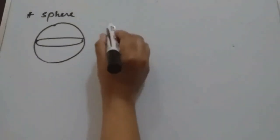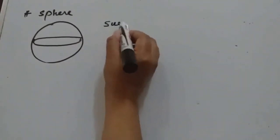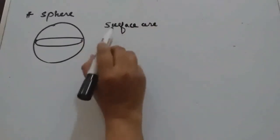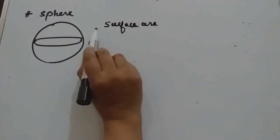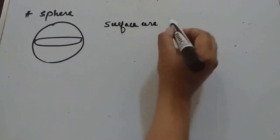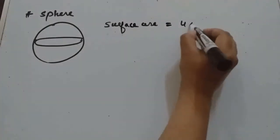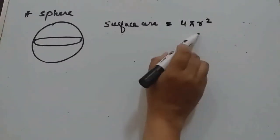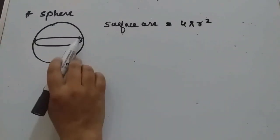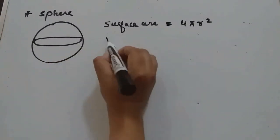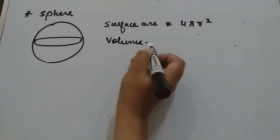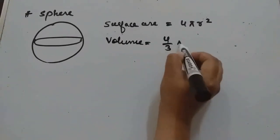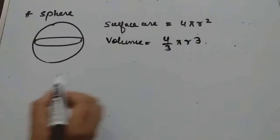For a sphere, we have surface area. In spheres, CSA and TSA will be the same. So surface area is 4πr², where r is the radius of the sphere, and volume will be 4/3 πr³.